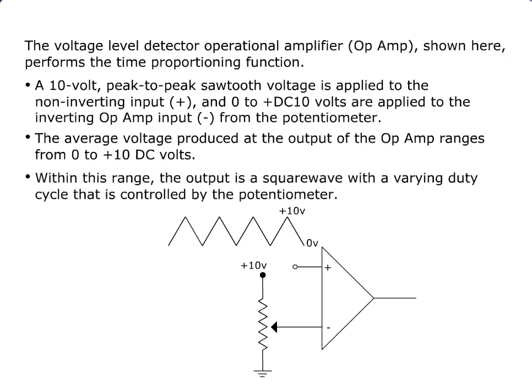The average voltage produced at the output of the op amp ranges from 0 to 10 DC volts. Within this range, the output is square wave with a varying duty cycle that is controlled by the potentiometer.